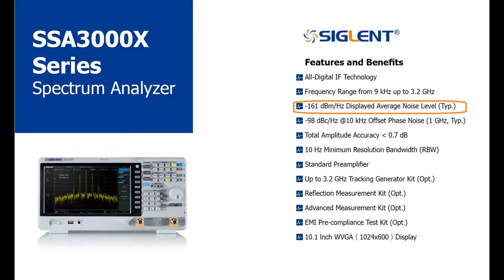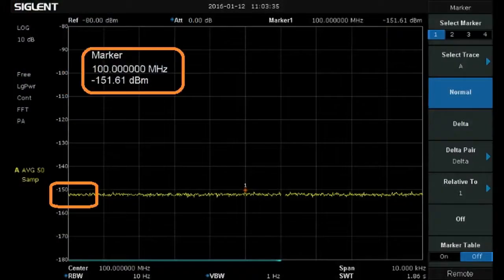The SSA 3000X has a DANL of minus 161 dBm per hertz typical. The written spec is commonly normalized to 1 Hz so the displayed noise floor of the instrument is typically near minus 151 dBm in actual use as we see here.